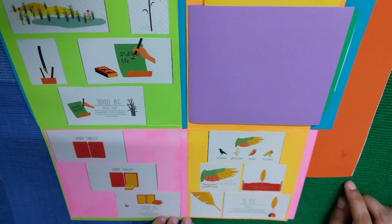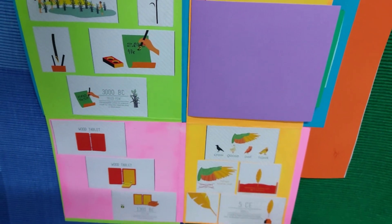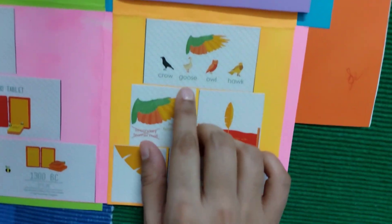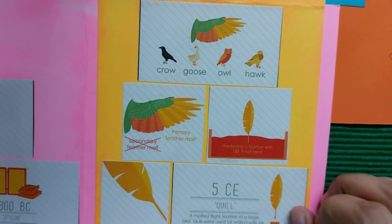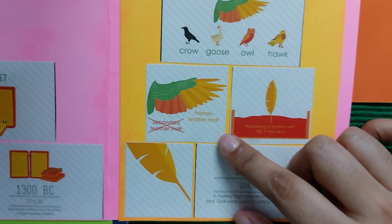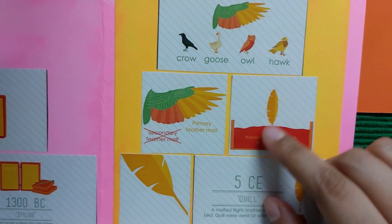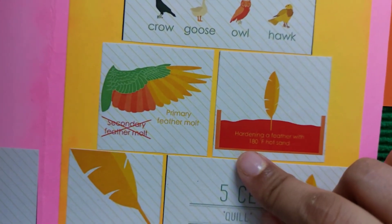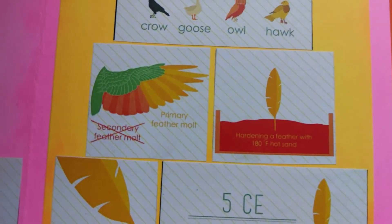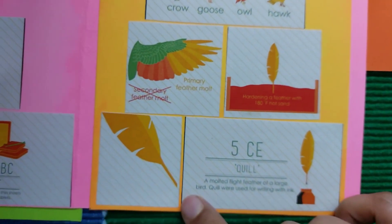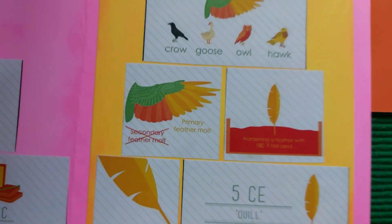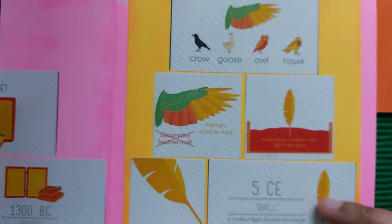The next one is the quill pen, which came in the 5th century CE. It is made from the feathers of crow, goose, owl, and hawk. These are the primary flight feathers. First, the feather was hardened in 180°F hot sand, then the molten tip of a large bird's feather was used for writing with ink.